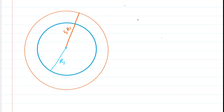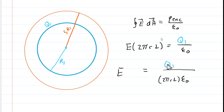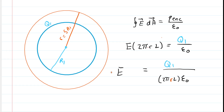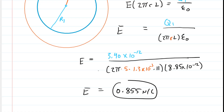We apply Gauss's law in the same fashion, simplifying the left side to the electric field times the lateral area of the cylinder. For the enclosed charge, we only include Q1. Dividing both sides by 2πRL, and plugging in R = 5R1 along with the known value of R1, the electric field turns out to be positive 0.855 newtons per coulomb.